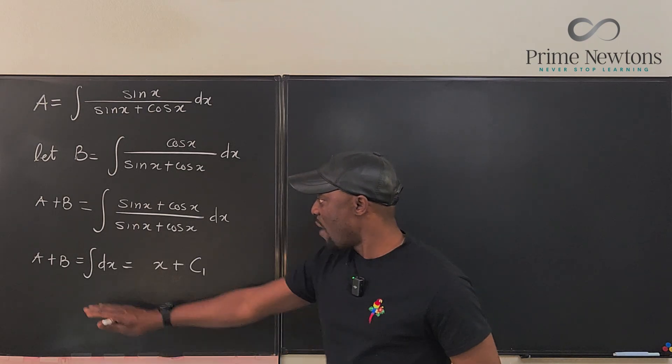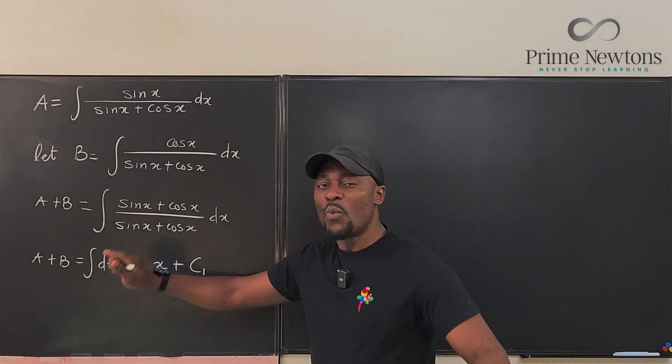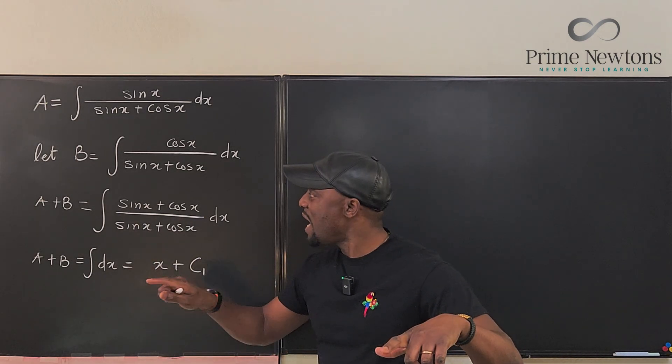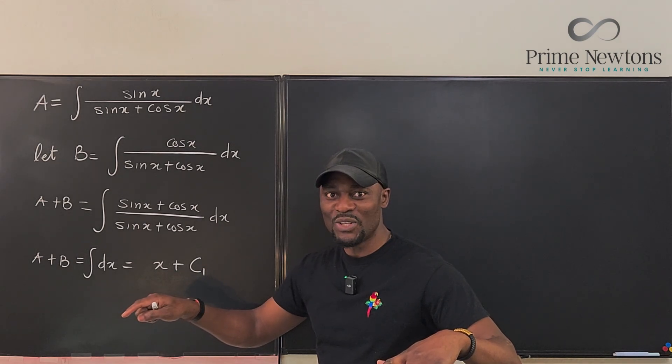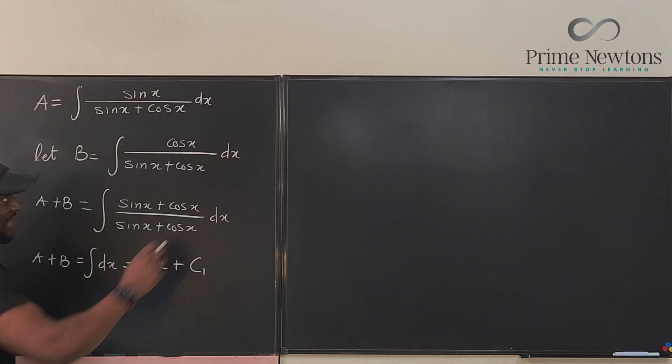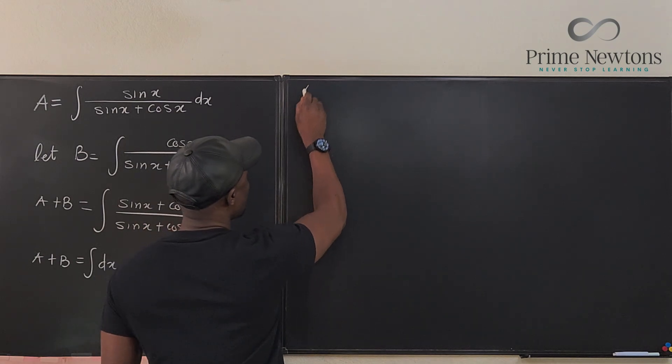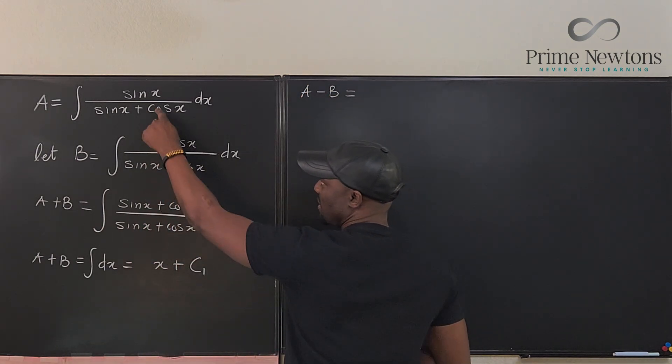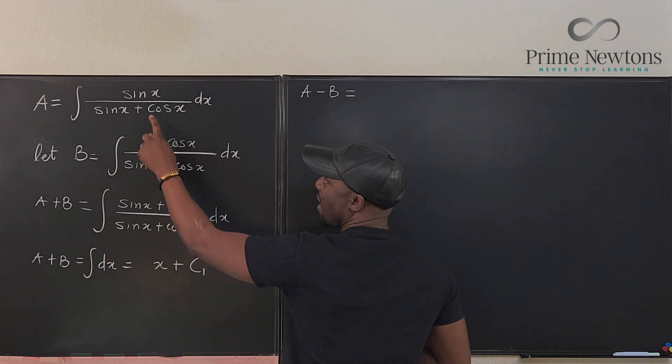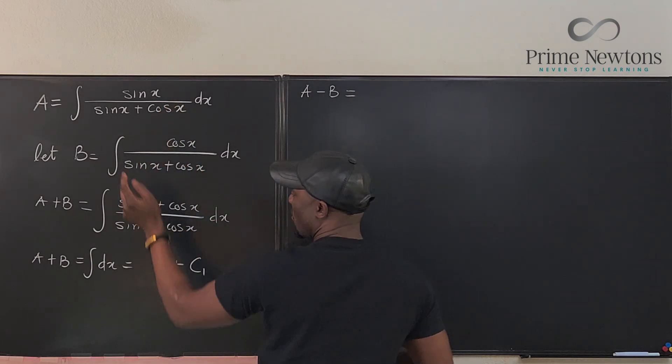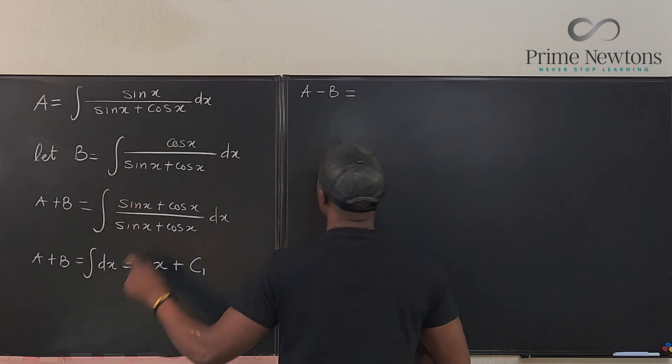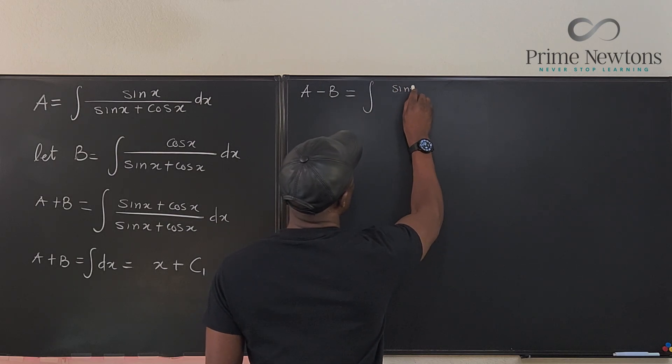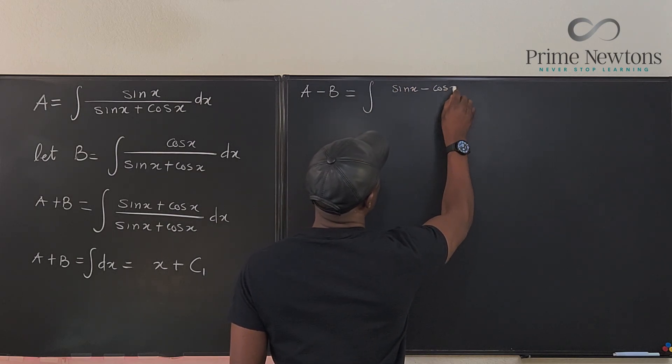Okay, now we've got the first integral. What about if we do A minus B? Well, similarly, A minus B is going to be the difference between these two integrals. So the only thing different is that this sign is going to change. So we have the integral of sin(x) minus cos(x) over sin(x) plus cos(x).